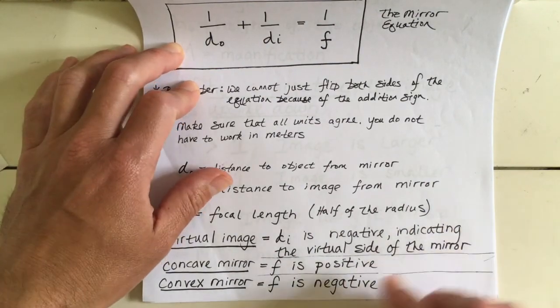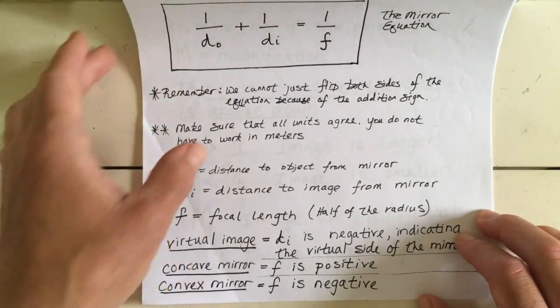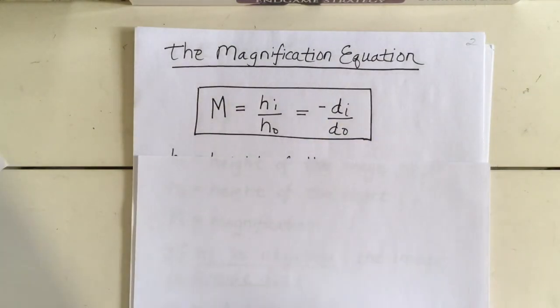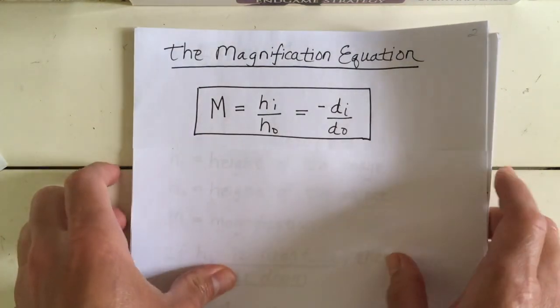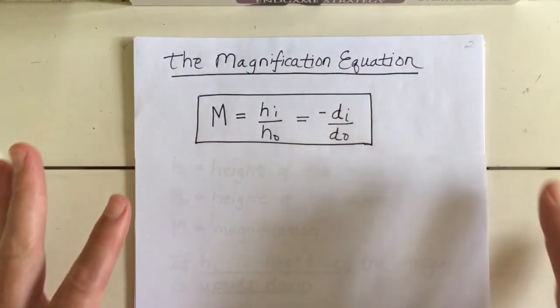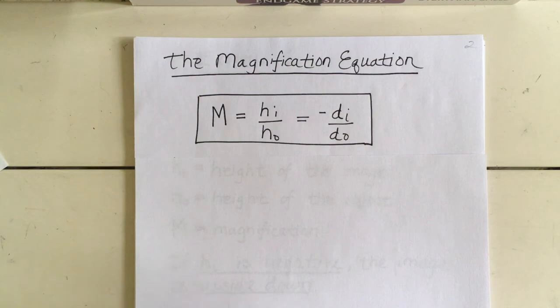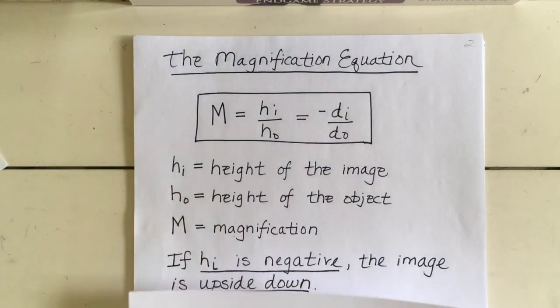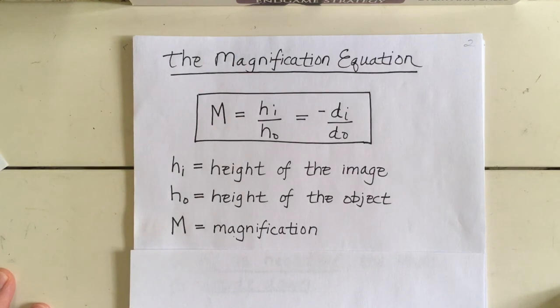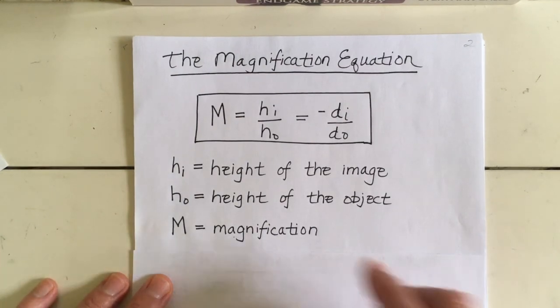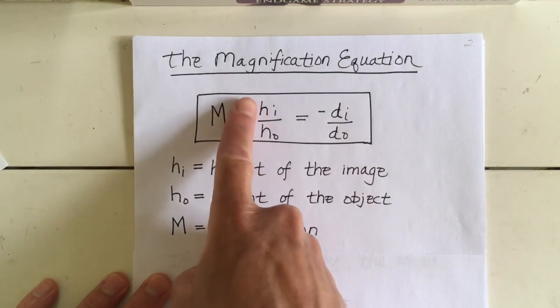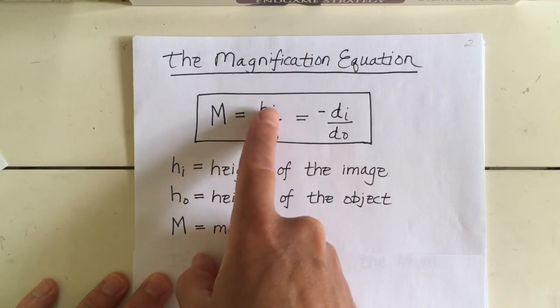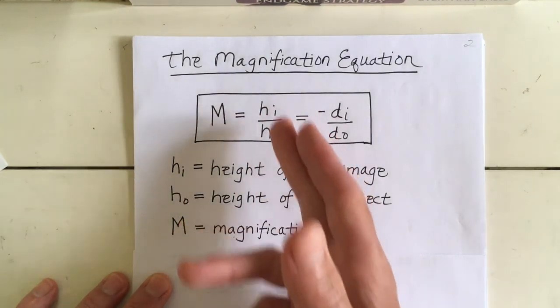So F is positive for a concave mirror. We also have the magnification equation, which relates the height of the image, the height of the object, the distance to the image, and the distance to the object. Magnification is the variable m. If the height of the image is larger than the height of the object, then m is greater than 1. If they're equal, m equals 1. If the height of the image is less, then m is less than 1.